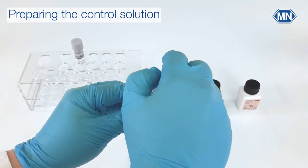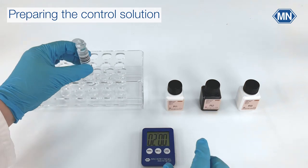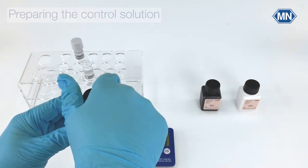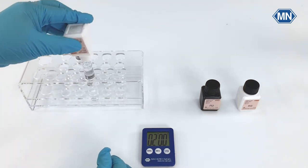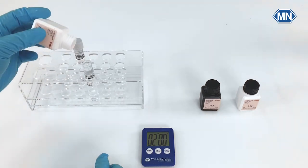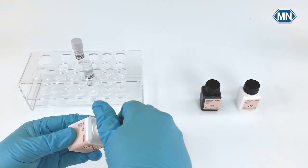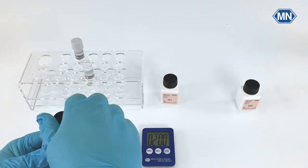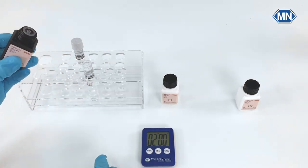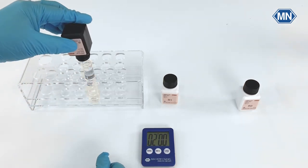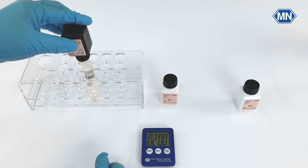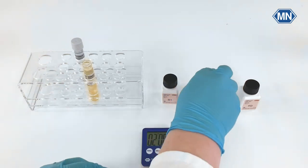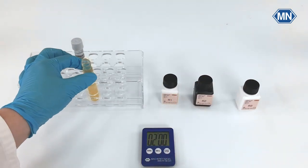Open the test tube and add two drops of R1. Also add two drops of R2. Close the tube and shake it.